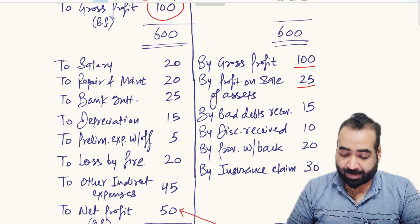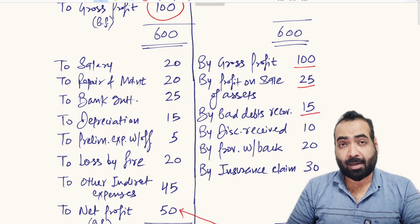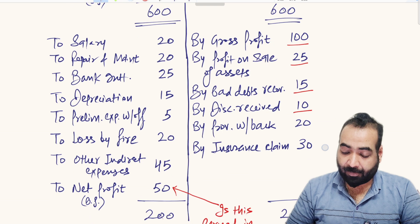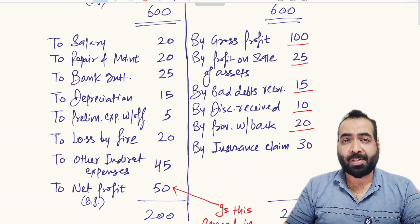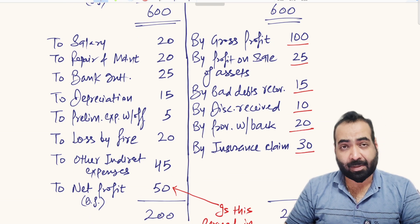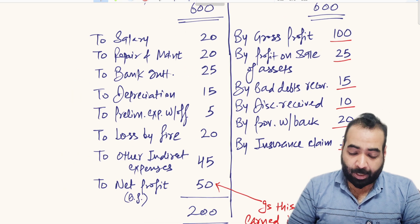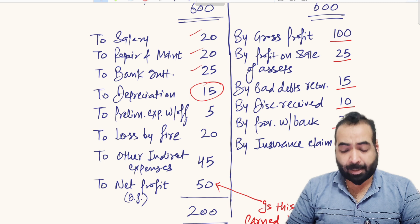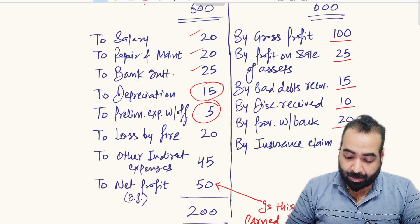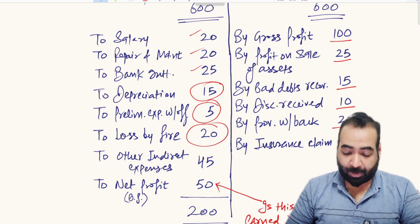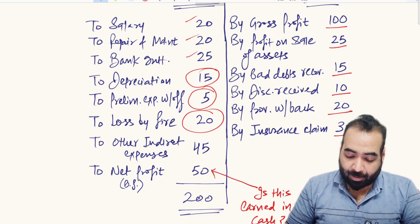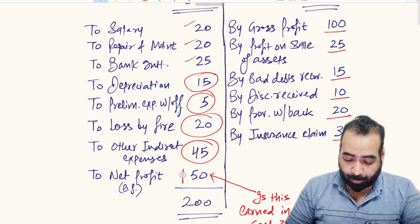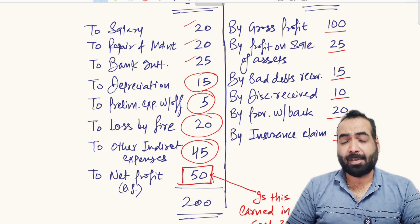From that gross profit of rupees 100, he earned rupees 25 as profit on sale of assets, rupees 15 representing bad debts recovered, rupees 10 as discount received, rupees 20 represents provisions written back, and rupees 30 is an insurance claim. He paid salaries, repair and maintenance, bank interest, depreciation, preliminary expenses written off, suffered a loss by fire of rupees 20, and incurred other indirect expenses of rupees 45, arriving at a net profit of rupees 50.